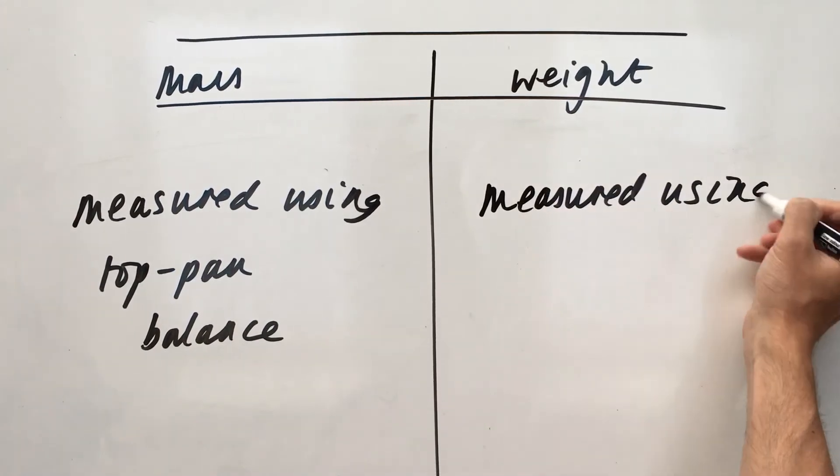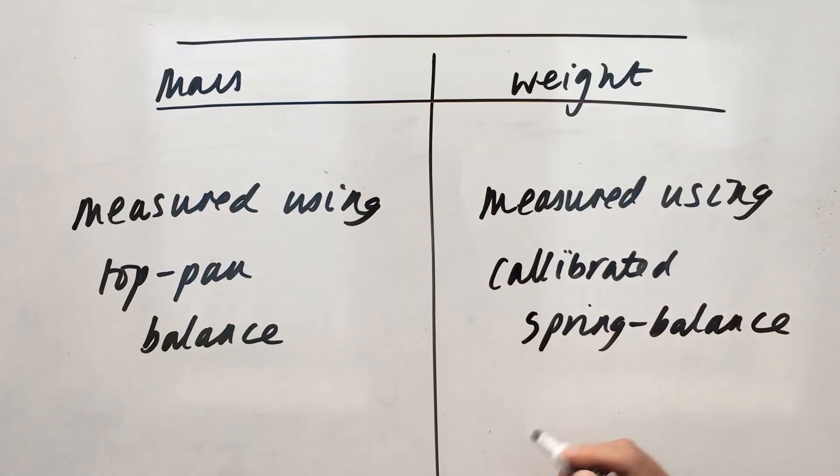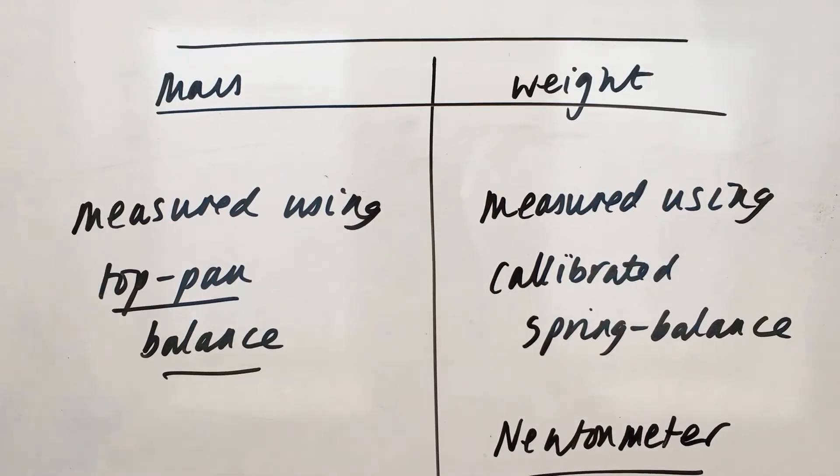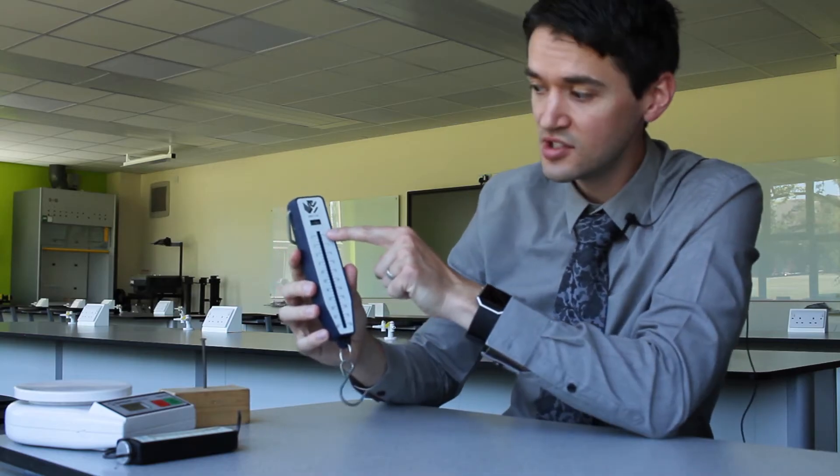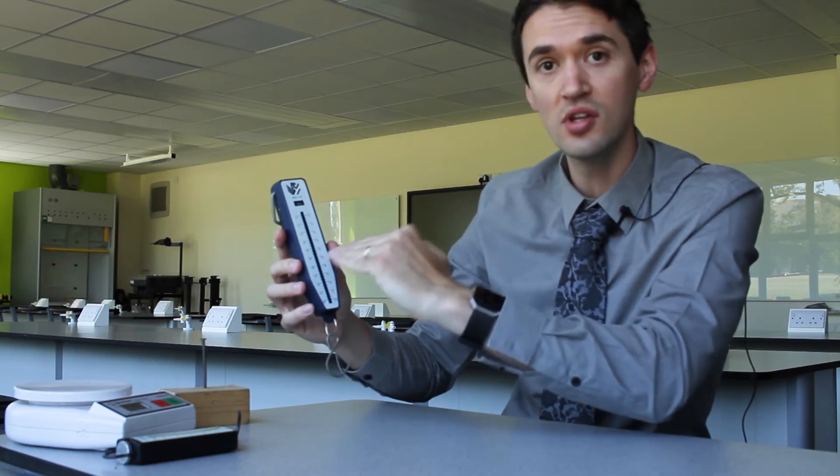If we want to measure the weight of an object, though, we need to use what's called, on the specification, a spring calibrated balance. Now, to you and me, you just have to remember that that's a newton meter. So this is a newton meter. Calibrated means it's got a scale down here which has been calibrated, i.e. matched to different weights.